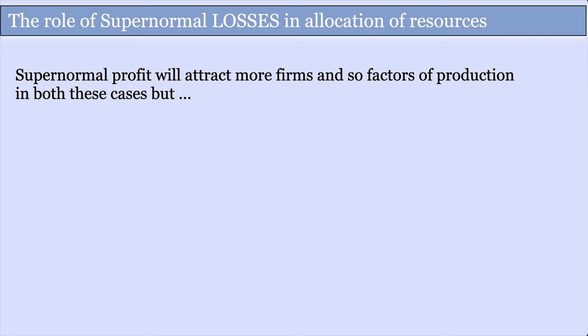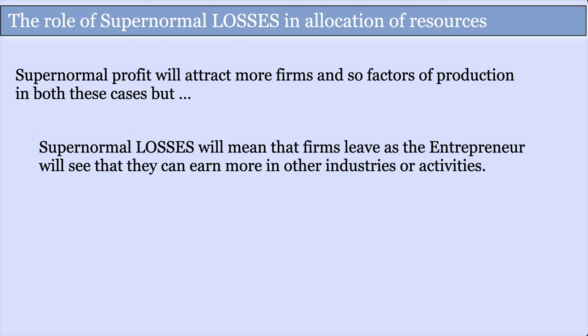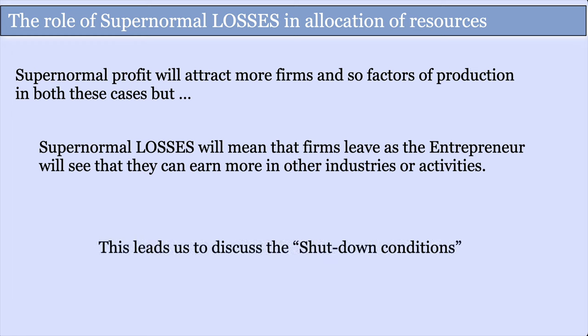In terms of resource allocation, supernormal profit attracts more firms and factors of production into an industry. But supernormal losses mean a firm is going to leave, because the entrepreneur sees they can make more in another industry. This leads us to discuss the shutdown conditions: if you're making a supernormal loss, then you should shut down.